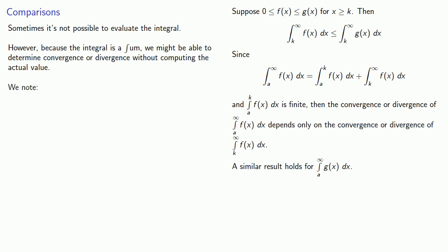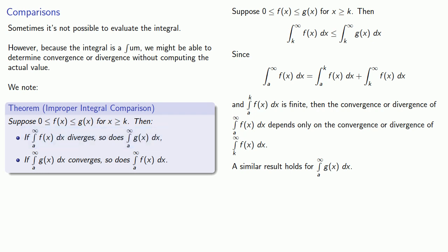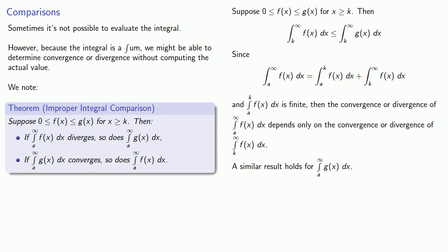What this suggests is the following theorem. Suppose 0 ≤ f ≤ g for x ≥ k. Then if the integral from A to infinity of f diverges, so does the integral from A to infinity of g. Likewise, if the integral from A to infinity of g converges, so does the integral from A to infinity of f. We could look at it another way: if you're larger than a divergent function, then the integral diverges. If you're smaller than a convergent function, the integral converges.